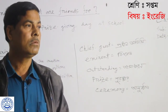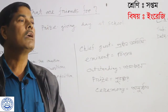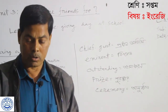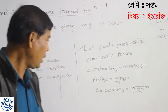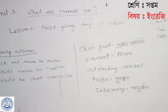After we have studied this unit, what can we achieve in this lesson? That means our learning outcomes: ask and answer the question, write answers to the question, and write the short composition.